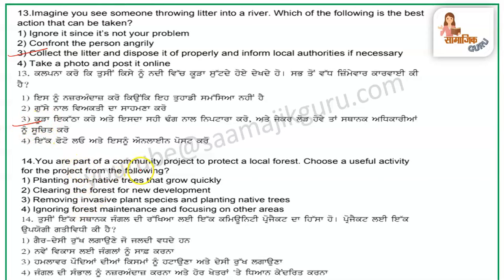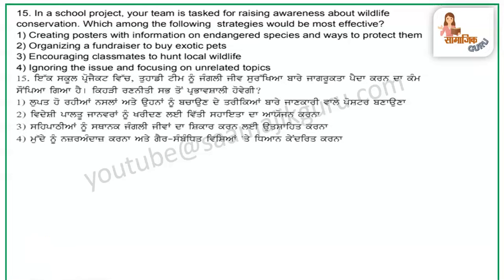Question number 14: You are part of a community project to protect a local forest. Choose a useful activity for the project from the following: planting non-native trees that grow quickly; clearing the forest for new development; removing invasive plants and planting native trees; or ignoring forest maintenance and focusing on other areas. The third option — removing invasive plants and planting native trees — is correct.